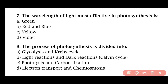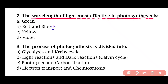Question 7: The wavelength of light most effective in photosynthesis is — green, red and blue, yellow, or violet. The correct answer is option B. Photosynthesis is maximum in red light, followed by blue light. So the correct answer is red and blue.